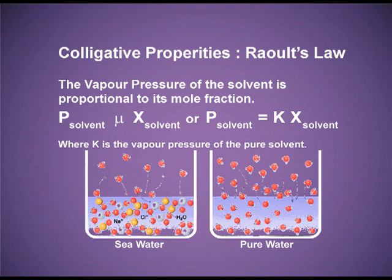In figure B, we have pure water. There is no salt. So on the surface, totally we have the water molecules and they are getting greater chance to escape and to convert into water vapour. Now you can compare the two figures and understand that there will be a lowering in the vapour pressure when a non-volatile solute is mixed.